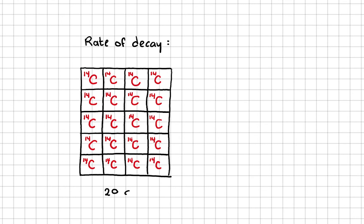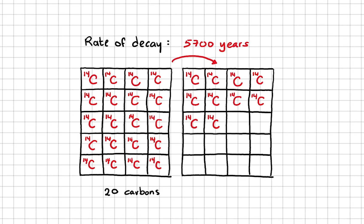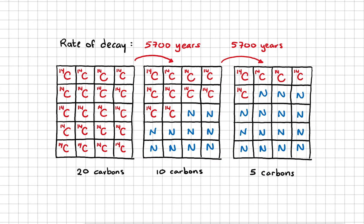Scientists know the exact rate of decay of carbon-14. If I have a sample with 20 carbon atoms, it will take 5,700 years for just 10 of these atoms to decay into nitrogen. It will take another 5,700 years before another 5 carbon atoms decay.